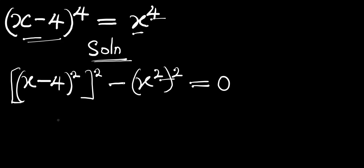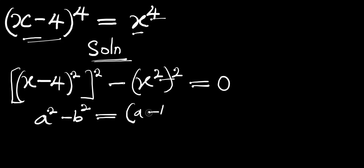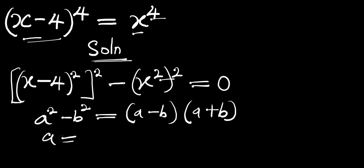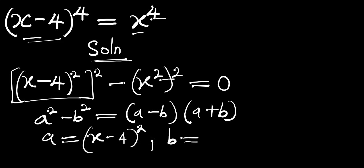What we are going to do next is use the difference of two squares. If you have a squared minus b squared, this equals (a minus b)(a plus b). In this case, a equals the whole of (x minus 4) squared, and b equals x squared.